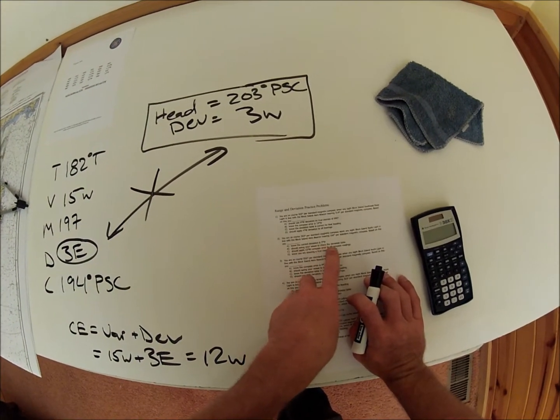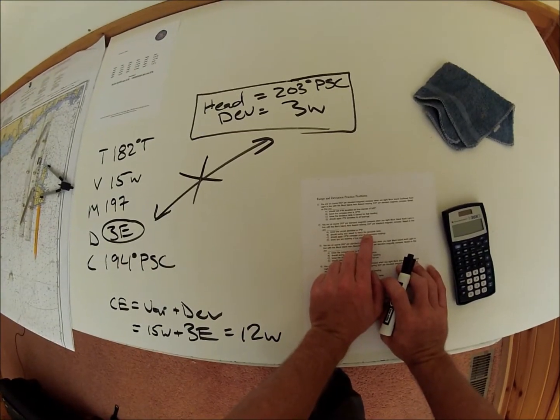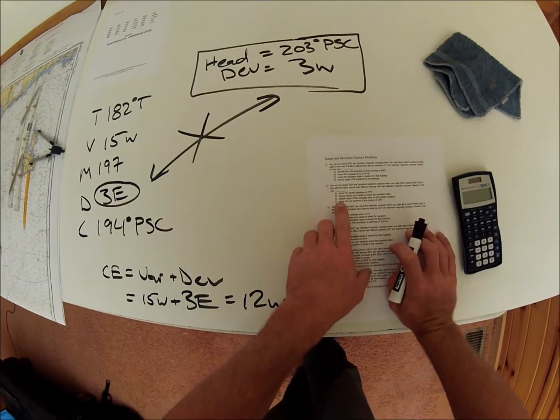Should swing your vessel to check the deviation table. This is the correct answer. And I'm going to come back to explain it. But I'm going to go through the rest of these so we can see why they're wrong.